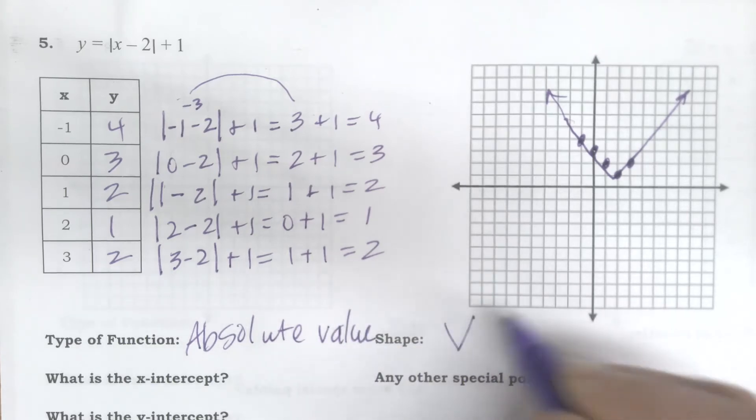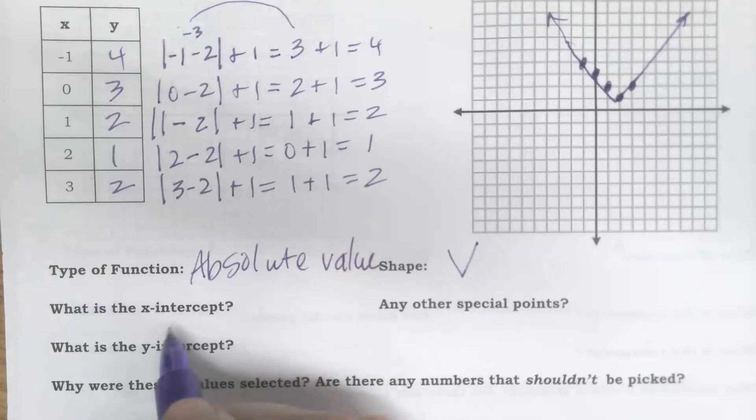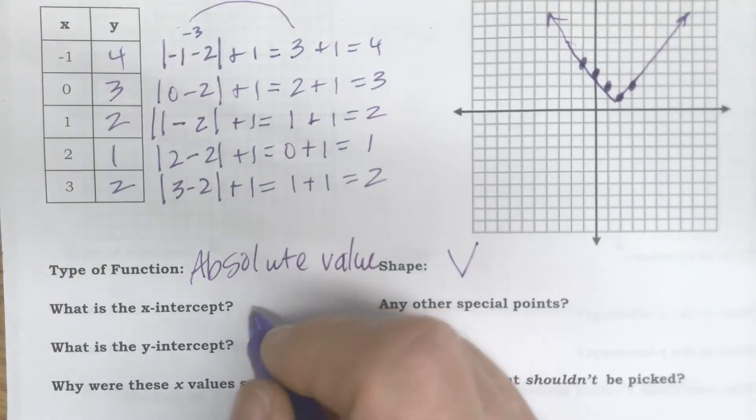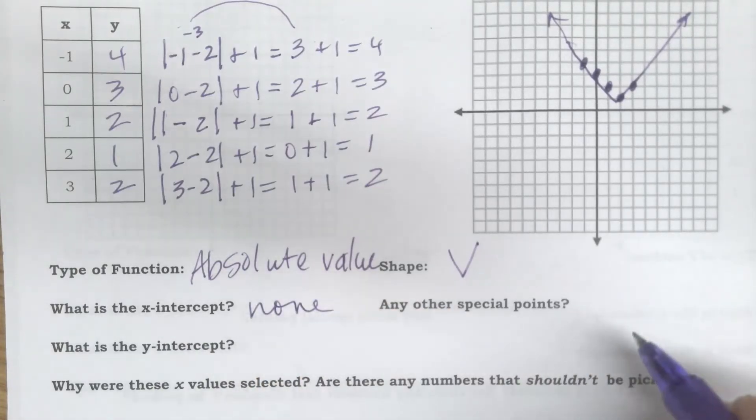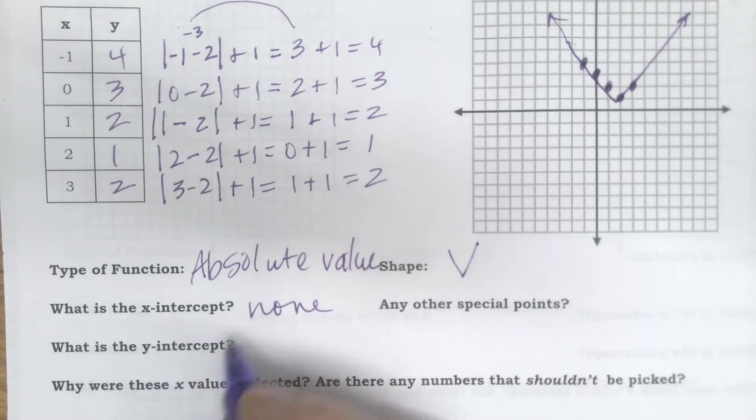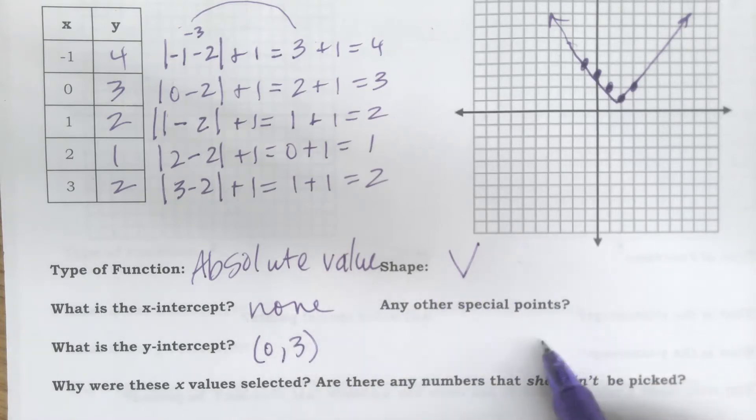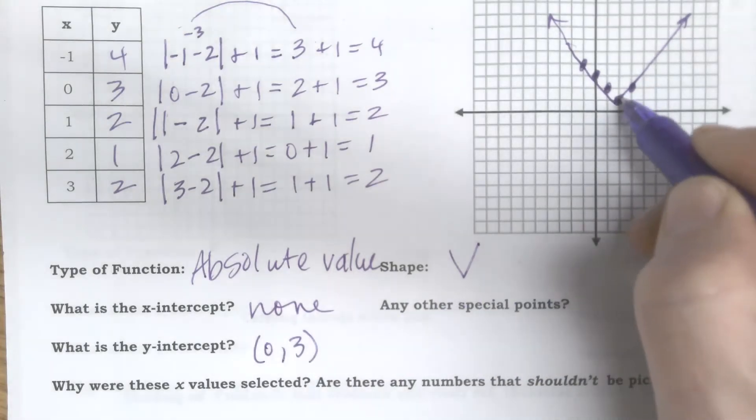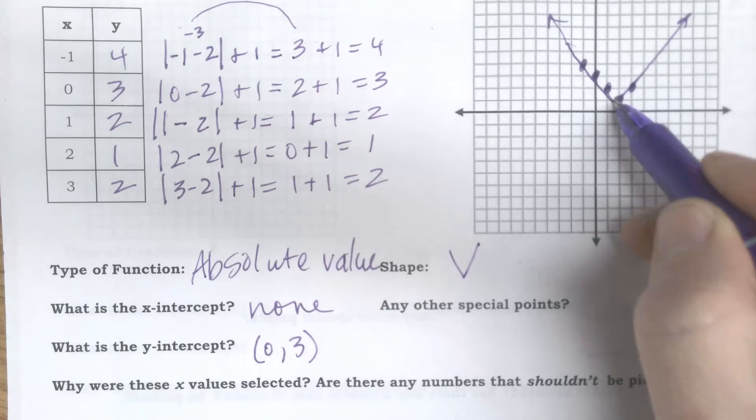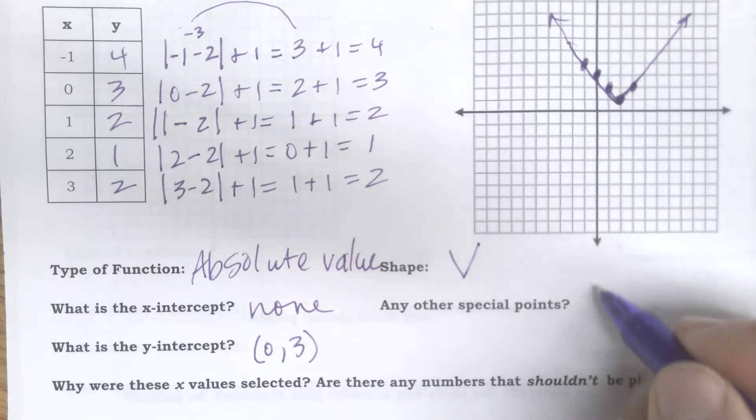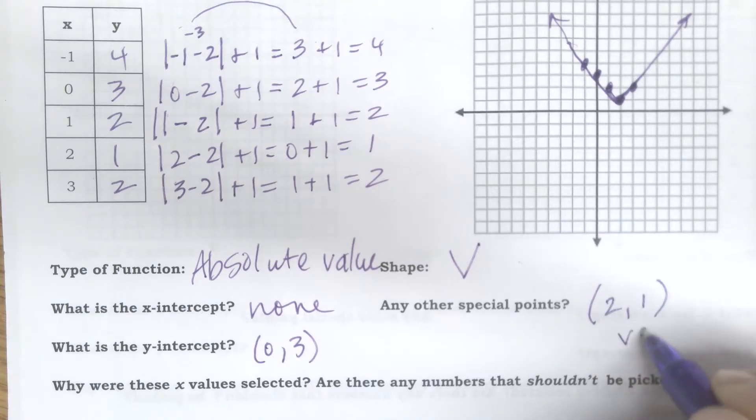And it's in the shape of a V. What's the x-intercept? Where does it cross the x-axis? It doesn't, so there aren't any. What's the y-intercept? Where does it cross the y-axis? Well, that's at 0, 3. Are there any other special points? I think this vertex is a pretty nice special point that's important, so that's the point 2 comma 1. I call that the vertex.